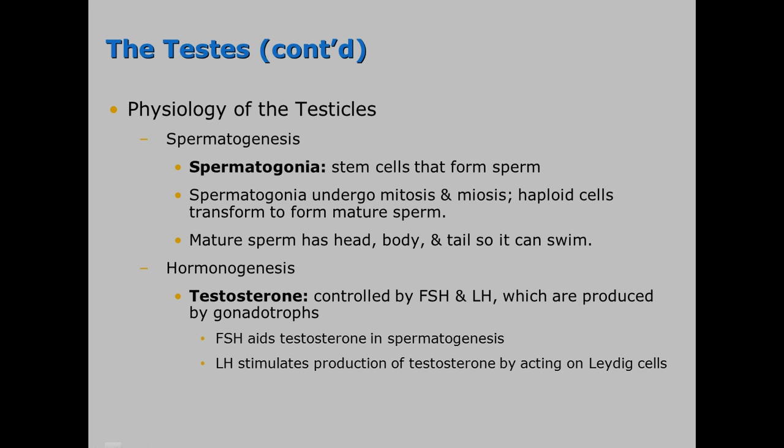Another function of the testes is spermatogenesis, or the production of sperm. This starts with spermatogonia, which are stem cells that form sperm. Spermatogonia undergo mitosis and meiosis, and then haploid cells transform to form mature sperm. The mature sperm has a head, body, and tail so it can swim.